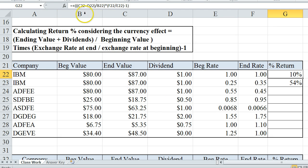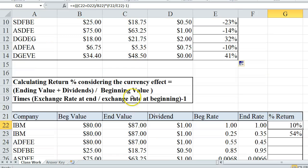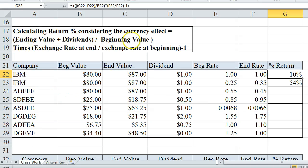I basically took the ending value plus the dividends divided by the beginning value. That, if that sounds familiar, because there's the formula up here. So I'm calculating my basic return on just the stock information. But then I'm going to multiply it by the exchange rate at the end divided by the exchange rate at the beginning and then minus the whole thing by one.